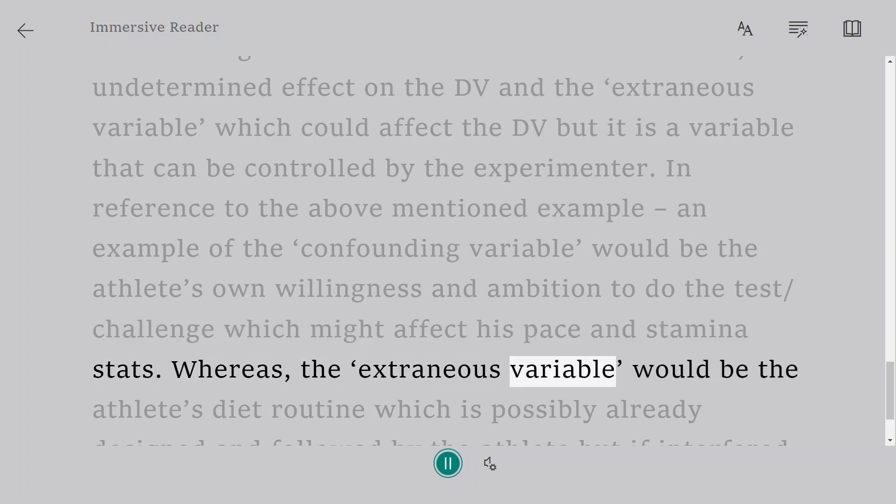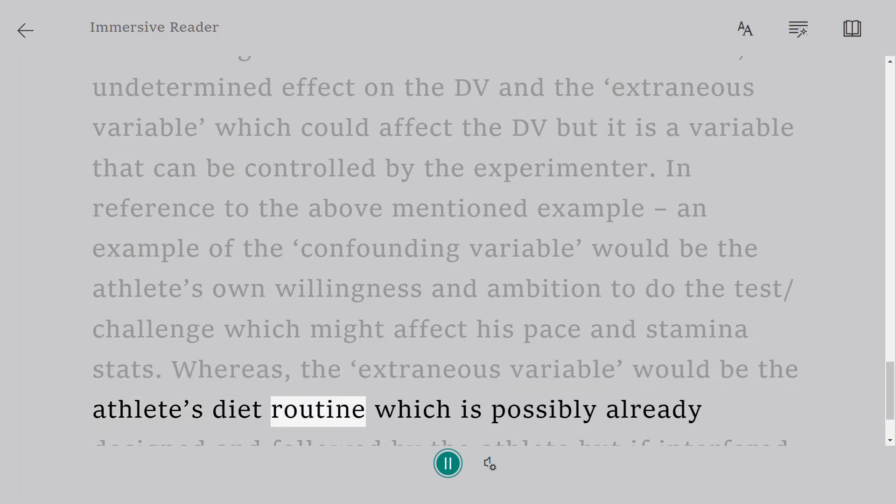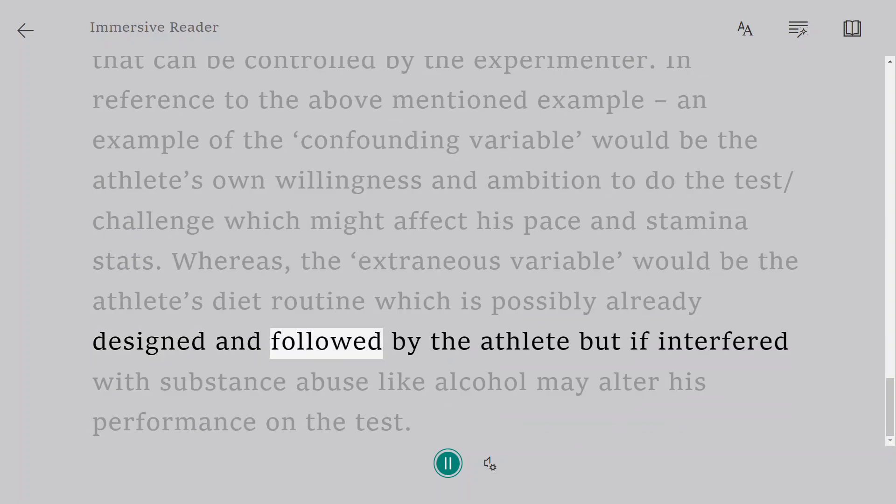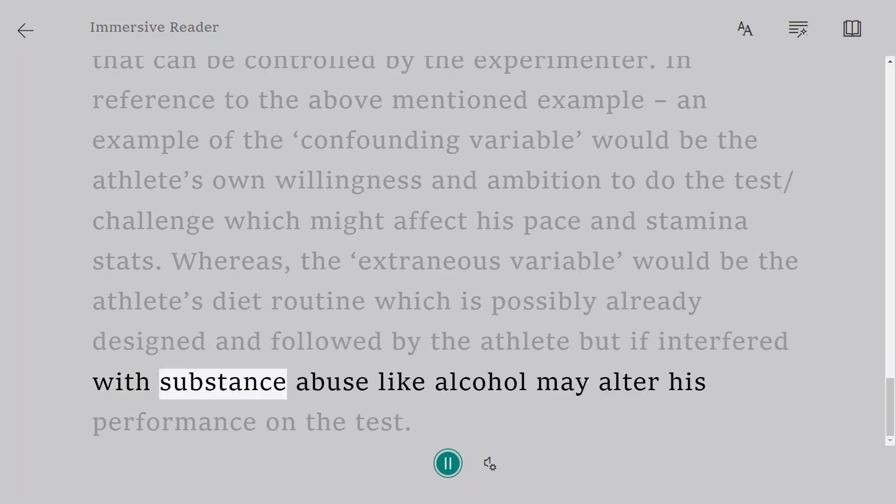Whereas, the extraneous variable would be the athlete's diet routine which is possibly already designed and followed by the athlete, but if interfered with substance abuse like alcohol may alter his performance on the test.